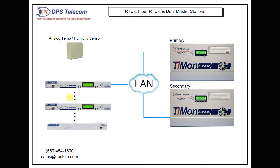You have 32 discrete inputs, so you can take in 32 contact closures. You have eight analog inputs, and one of those analog inputs would be used for a temp and humidity sensor — you'd use one input for temp and another for humidity, giving you temperature and humidity with a pretty high degree of accuracy. That's obviously very important at any remote infrastructure site that may have servers, radios, or any kind of equipment, where you've got to know the cooling system is working.